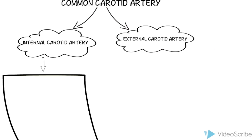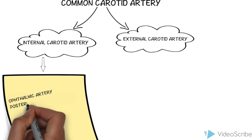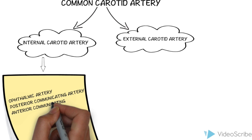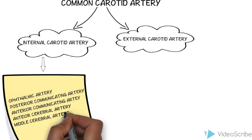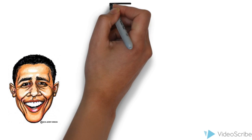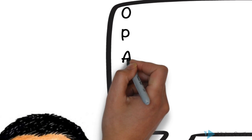From the internal carotid artery there are mainly six branches: the ophthalmic artery, posterior communicating artery, anterior communicating artery, anterior cerebral artery, middle cerebral artery, and anterior choroidal artery. You can memorize these using the mnemonic OPAMA.